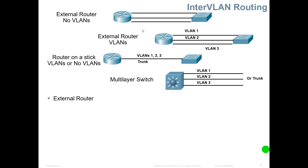In inter-VLAN routing we can have no external routers, meaning there will be a dedicated link between each VLAN and the router. Here we have three dedicated links between our switch and our router. We can transition that to a trunk link carrying all three VLANs, or we could also use a multi-layer switch with all the appropriate VLANs.